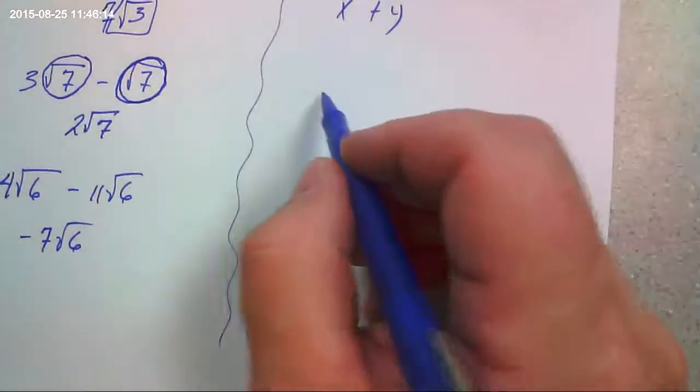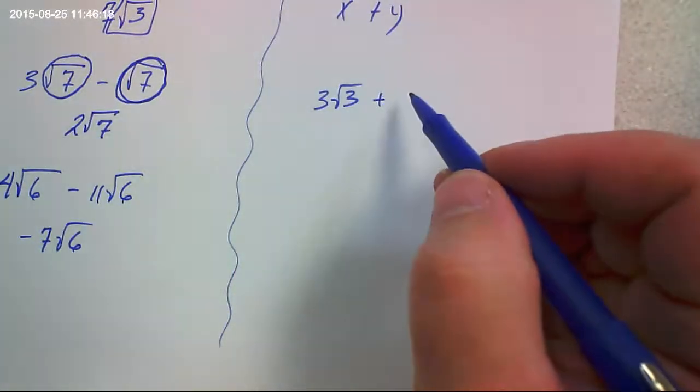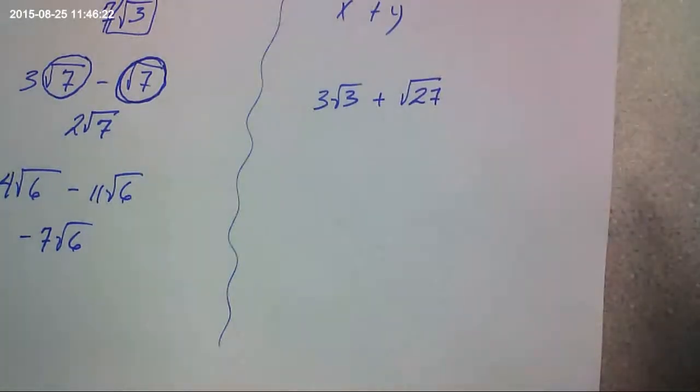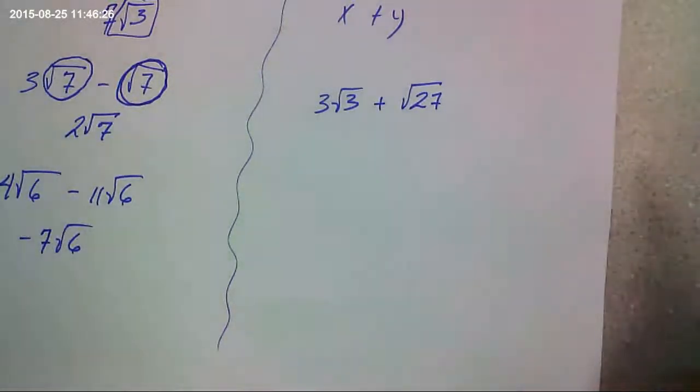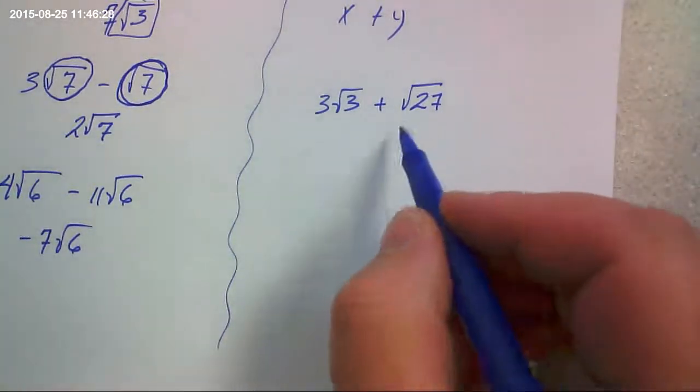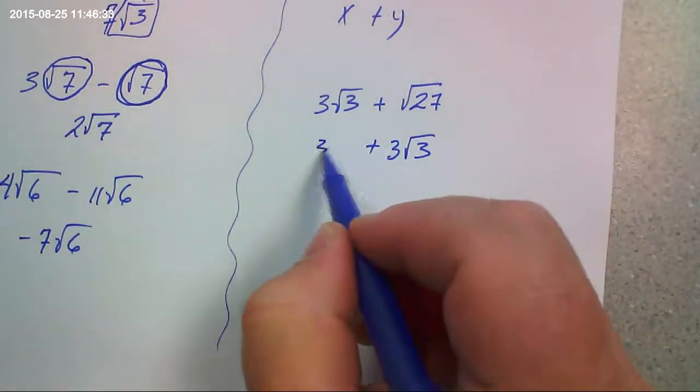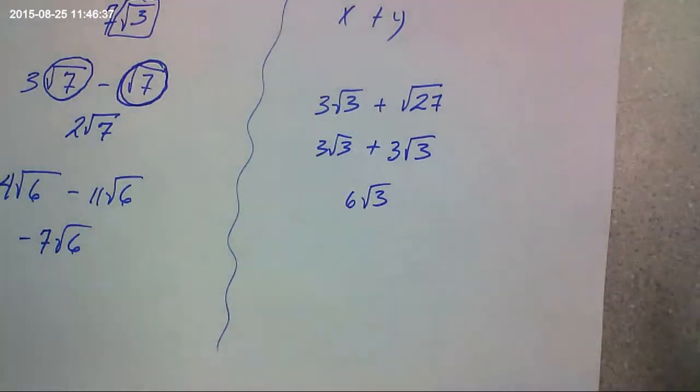Now what ends up happening sometimes is you might end up with something like this. Okay? At just a quick glance, they don't look like they're like terms, but it turns out they are because this one is 3 times the square root of 3 because it's 9 times 3. And so now you have 6 square roots of 3.